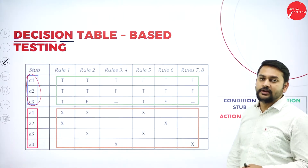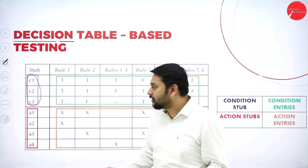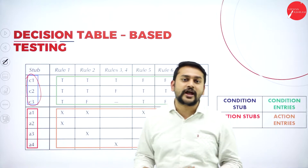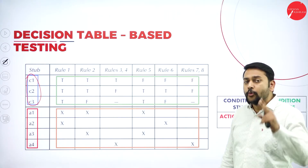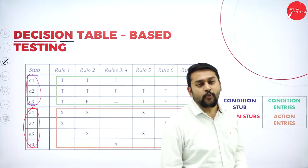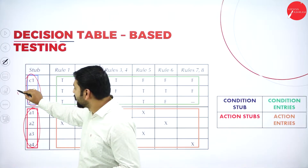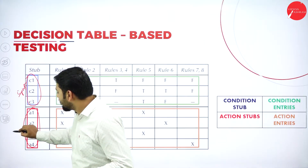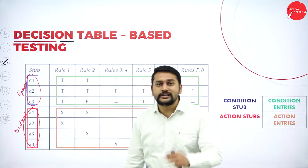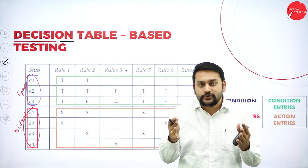The first type is the condition stub. I have C1, C2, C3 — you can have n number of conditions depending on your problem, there is no limit. The second type is the action stub. The condition stub represents input and the action stub represents expected output. So for a given input, what is the reaction — what action do you get — that's the action stub.